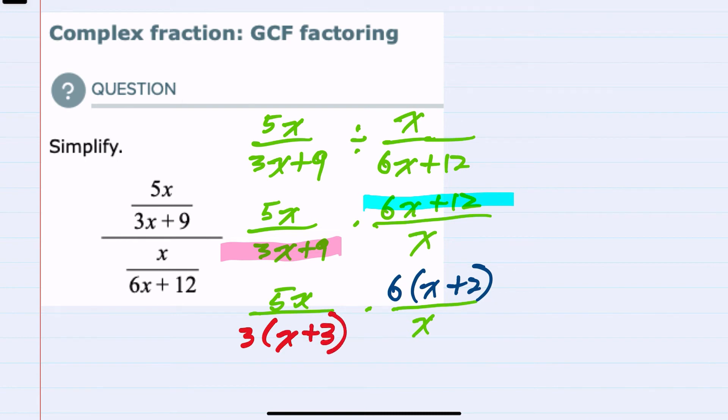With everything now factored, I can look for common factors to cancel. On this diagonal, I see that both expressions have an x, so the x's will cancel. On the other diagonal, the x plus 2 and x plus 3 are different, so they won't cancel.